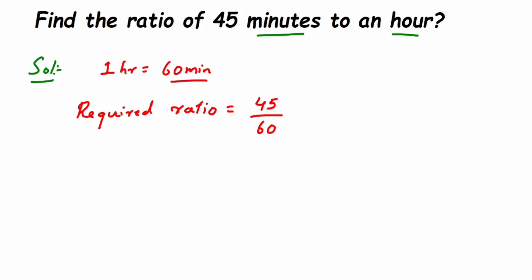Now 45 upon 60 we got it. Now we're going to cancel this. Ratios are always written in reduced form. You cannot leave the answer here. You have to cancel the numbers and bring it to the lowest form or the reduced form.